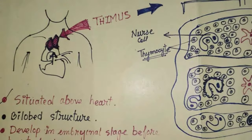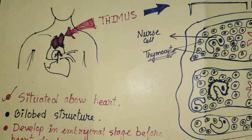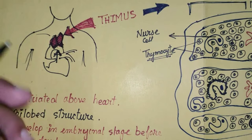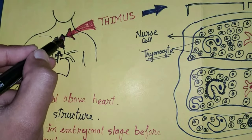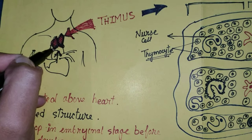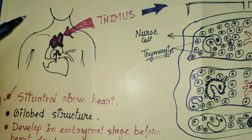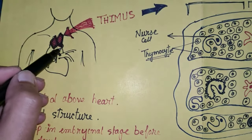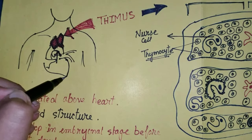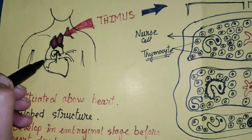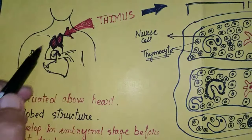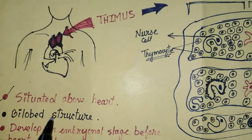First, we will discuss the position of the thymus gland — yeh thymus gland kahan par rehta hai. It is located inside our thoracic cavity, just above the heart. The thymus gland is situated just above the heart in our thoracic cavity.